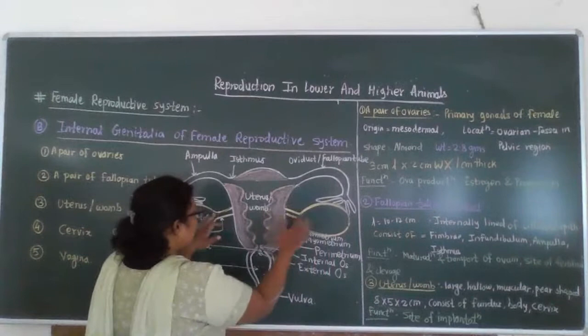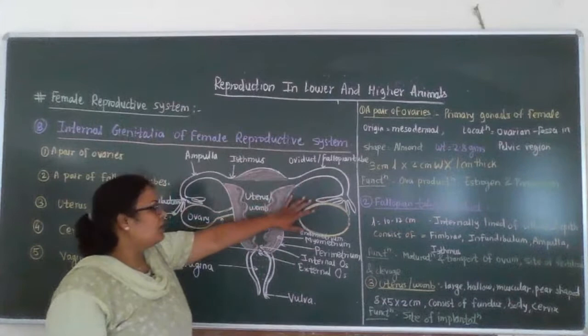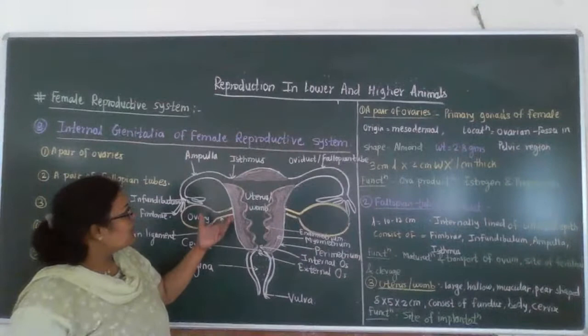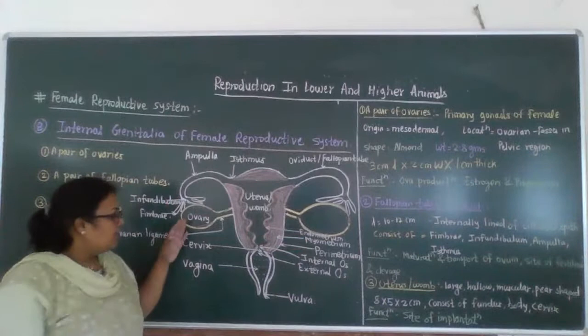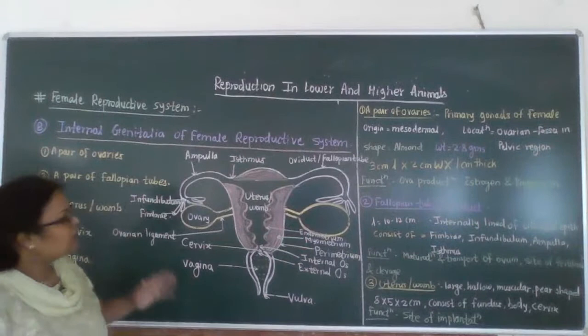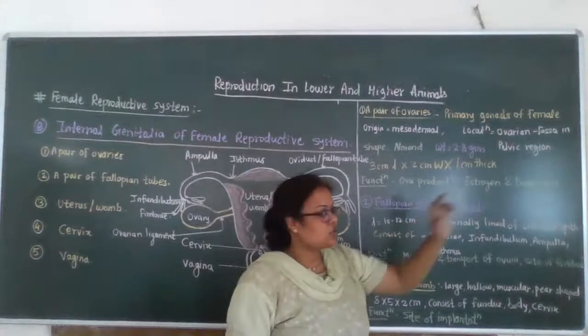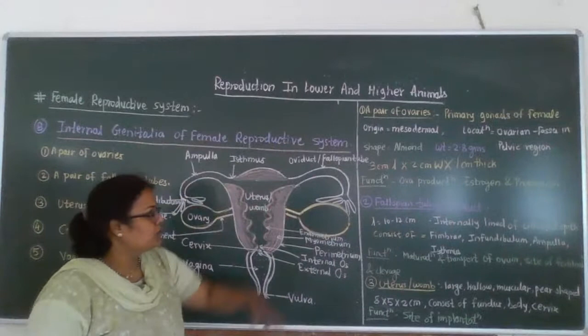Ovaries are present on either side of the uterus, attached to the uterine wall and mesentery. They are also attached to the pelvic cavity by a mesovarium. These ovaries are primary gonads of a female and are responsible for the production of ova when the female comes to maturity. They also produce the female sex hormones estrogen and progesterone.